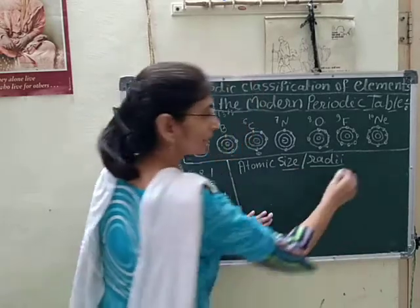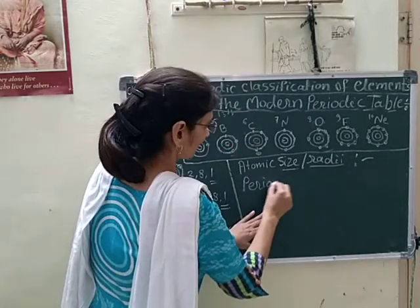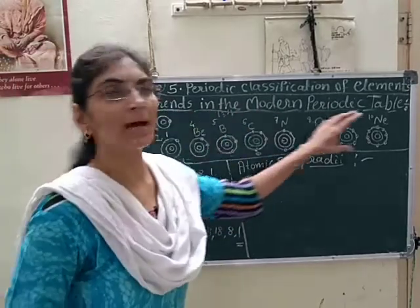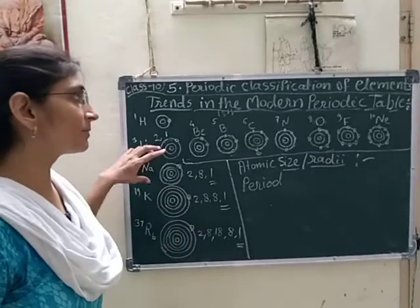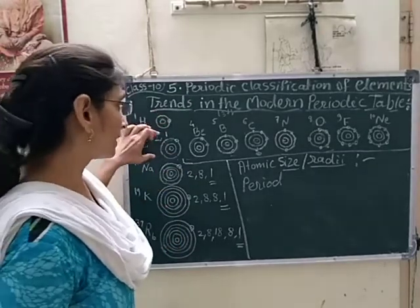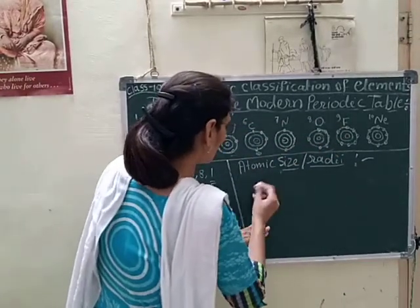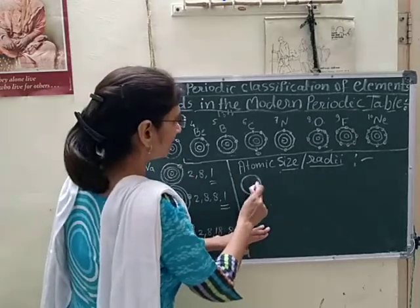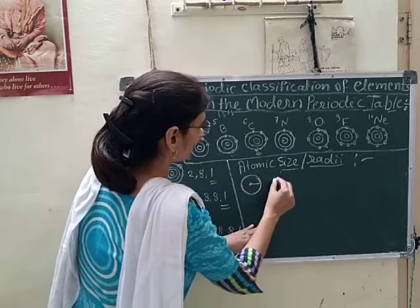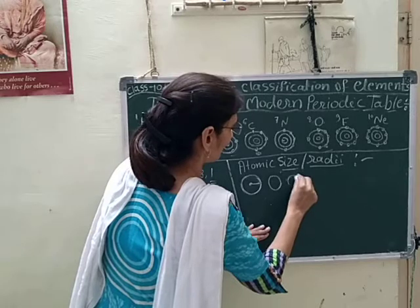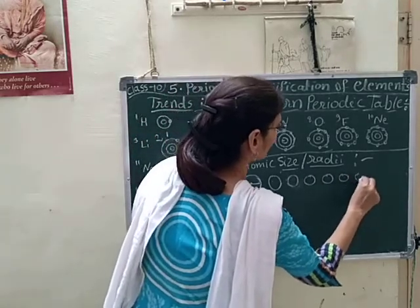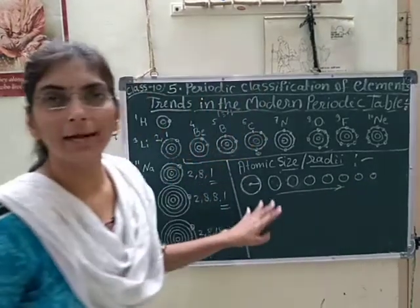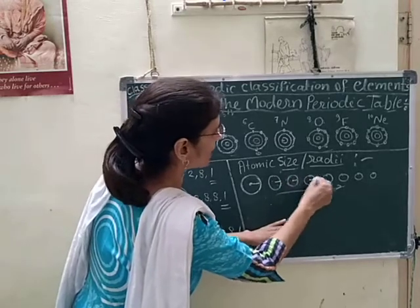So the trend of atomic radius along the period and along the group, we will discuss comparatively. The trend of atomic radius along the period — it is decreased. Along the period the atomic radius decreases. We can see that along the period the atomic radius decreases.